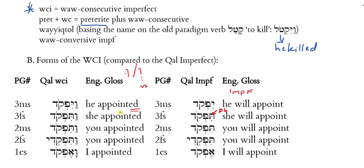Now I'd like to talk about how you form these WCI forms. The most distinctive part of this form is the vav that's attached to the form that looks like a qal imperfect. The way to say 'he appointed' is vayifqod. Now, what do you see about the vav here? This is not the normal way to point the conjunction vav. Remember how we learned back in chapter six that whenever you want to attach a conjunction vav on a form it's always a prefix and it comes standard with a vocal sheva.